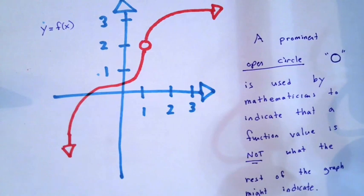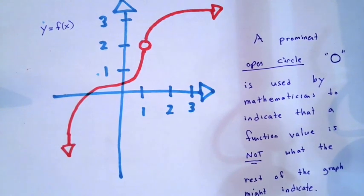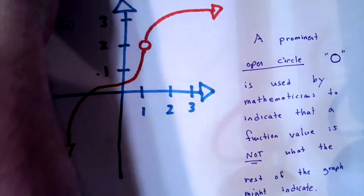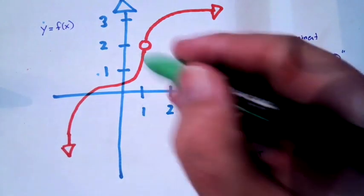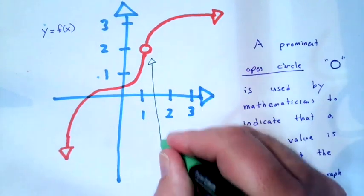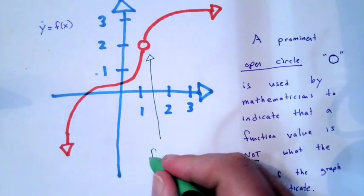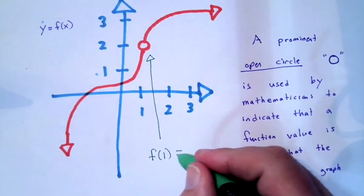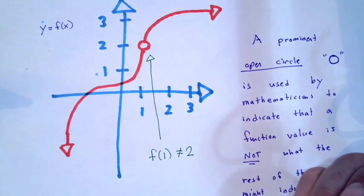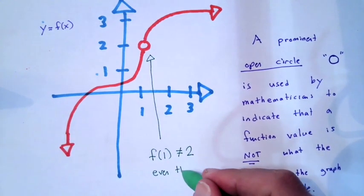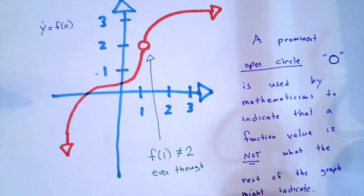Even though from this picture it might look like f of 1 is equal to 2, it doesn't work. And the reason it doesn't work is this open circle is telling us that there's an anomaly on the graph. f of 1 is not 2, even though the rest of the graph might indicate that.